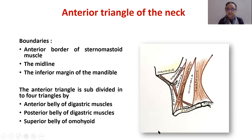The anterior triangle has the boundaries of the anterior border of the sternomastoid muscle, the midline, and the inferior margin of the mandible. This triangle is further subdivided into four triangles by the anterior belly of the digastric muscle, the posterior belly of the digastric muscle, and the superior belly of the omohyoid. The four triangles are: submental triangle, submandibular triangle, carotid triangle, and muscular triangle.